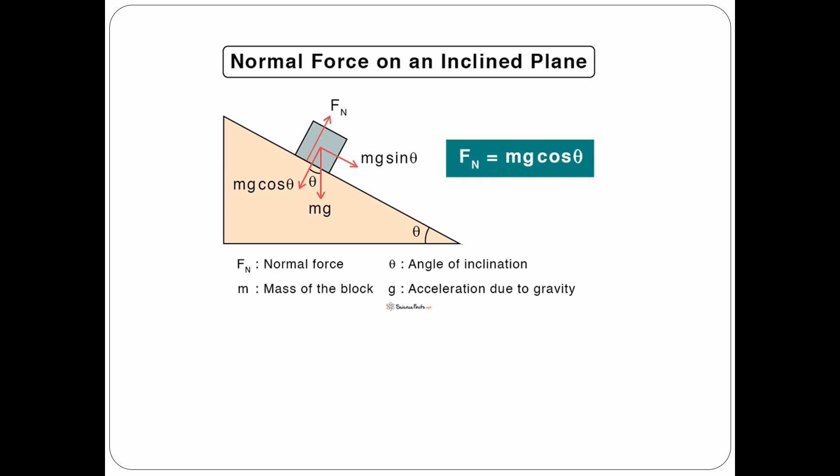So the formula to calculate the normal force is, normal force is equal to weight force times cosine theta. So as the angle increases from 0 to 90 degrees, the normal force will decrease.